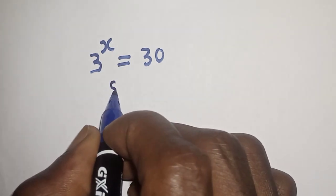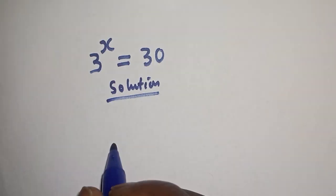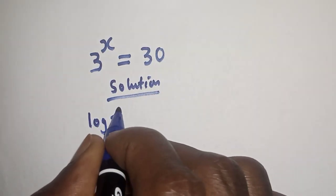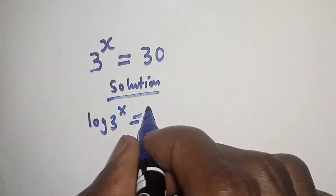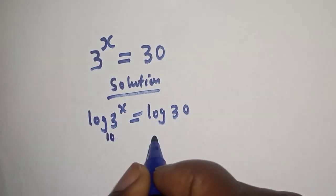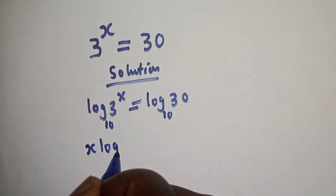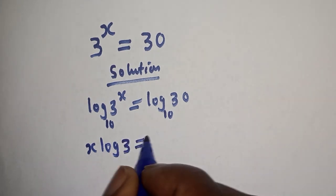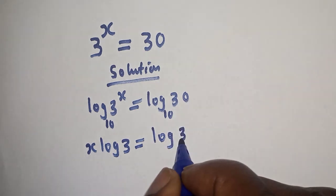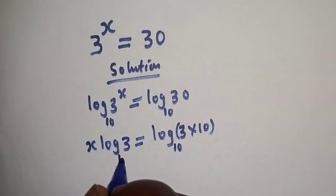Like, share, comment and subscribe. Solution: Let's take the log of both sides. Log 3 raised to power x is equal to log 30. Let's make everything base 10. x log 3 is equal to log 30, which can be written as 3 multiplied by 10, base 10.